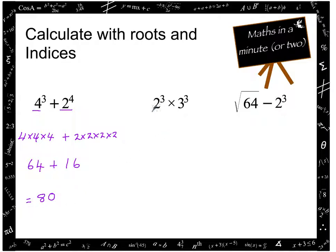The second one again we can see we've got different base numbers so we have no choice but to write them out in full. So this means 2 times 2 times 2 this time and we're multiplying that by 3 times 3 times 3. So 2 times 2 is 4 times 2 is 8 and 3 times 3 is 9 times that by 3 is 27.